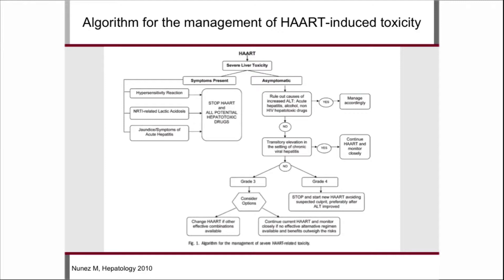Marina Nunez also suggests an algorithm for managing HIV drug toxicity. If your patient has symptoms — signs of hypersensitivity such as rash, fever, eosinophilia, or signs of lactic acidosis or jaundice — stop all potentially hepatotoxic drugs. When the patient is asymptomatic, rule out an underlying liver disease first. If none is found and the patient has grade 3 ALT elevations, you can either change the regimen or continue with close monitoring. For grade 4 — above 10 times the upper limit of normal — stop the ARVs and, if possible, wait until ALT improves before trying a new treatment regimen.